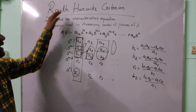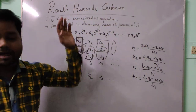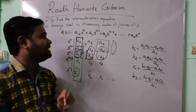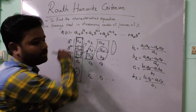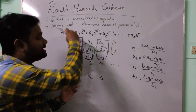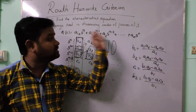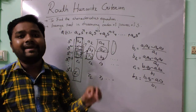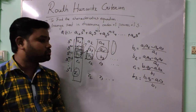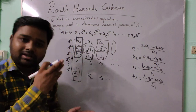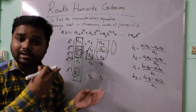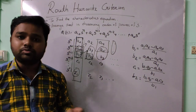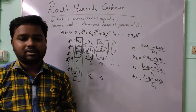In today's class we have studied the Routh-Hurwitz criteria, where we arrange coefficients of the characteristic equation in a particular array method in decreasing order of s to the power n. This is also known as the Routh array criterion. In the next class, we will study with a particular example covering all conditions — stable, unstable, and the special case when a value is zero. Thank you.